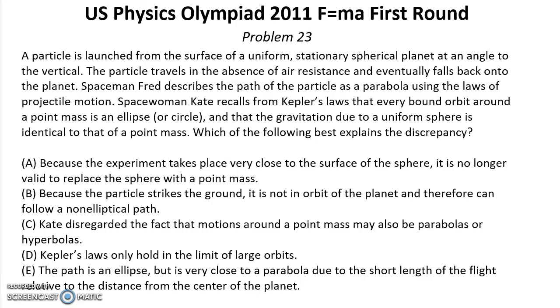A particle is launched from the surface of a uniform stationary spherical planet at an angle to the vertical. The particle travels in the absence of higher resistance and eventually falls back onto the planet. Spaceman Fred describes the path of the particle as a parabola using the laws of projectile motion. Spacewoman Kate recalls from Kepler's laws that every bound orbit around a point mass is an ellipse or circle and that the gravitation due to a uniform sphere is identical to that of a point mass. Which of the following best explains the descriptancy?